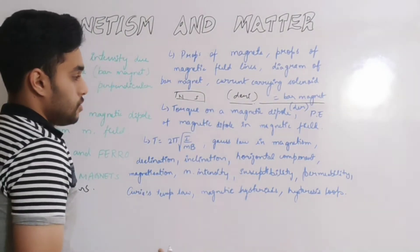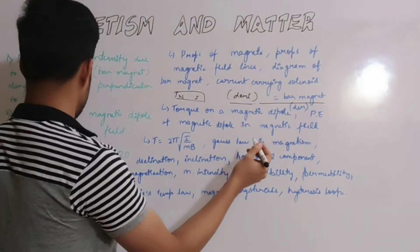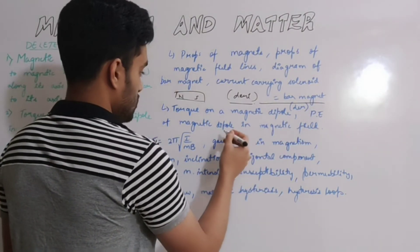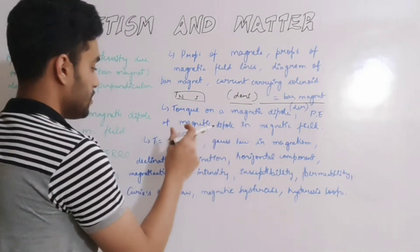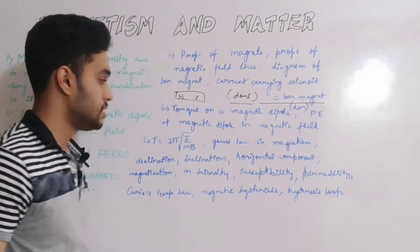Next thing is torque on a magnetic dipole and potential energy of magnetic dipole in magnetic field. These questions are important. Potential energy of magnetic dipole in magnetic field is a small derivation you need to know.